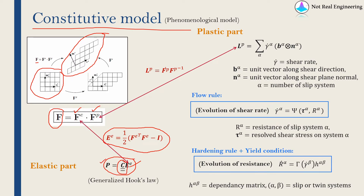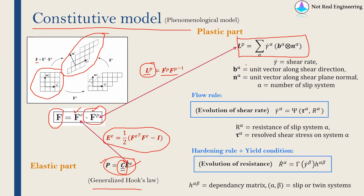This stiffness tensor C will not be isotropic — it will depend on directions. So we also need a relation between the plastic deformation gradient F^P and stress. In most plastic deformation models we give this relation in terms of strain rate, so we obtain the plastic velocity gradient L^P from F^P using this equation. We then define a relation between L^P and stress: the plastic velocity gradient L^P depends on shear rates that are different for different slip systems. For a crystal with 6 slip systems, alpha varies from 1 to 6, and L^P is obtained by summing 6 shear rate terms, each of which depends on stress.